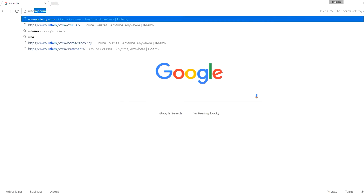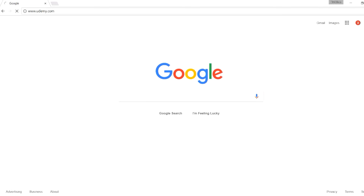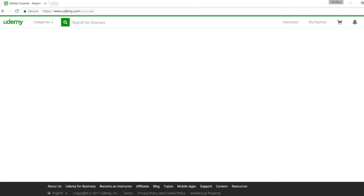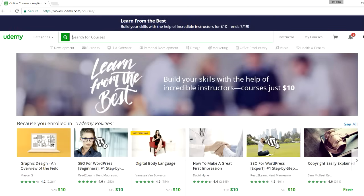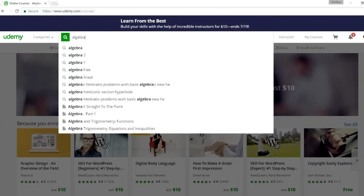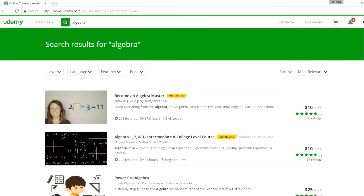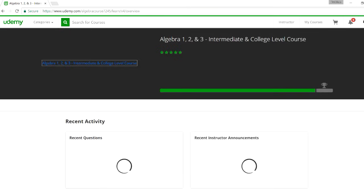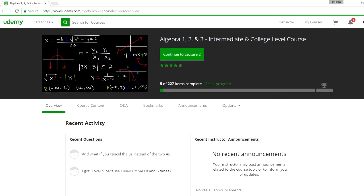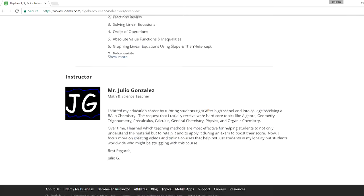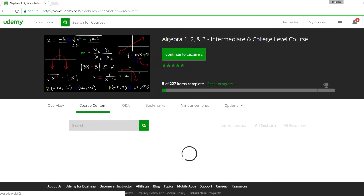So go to udemy.com. Now in the search box, just type in algebra. And it should come up. So it's the one with the image with the black background. So if you select that option, and if you decide to go to course content, you can see what's in this particular course.